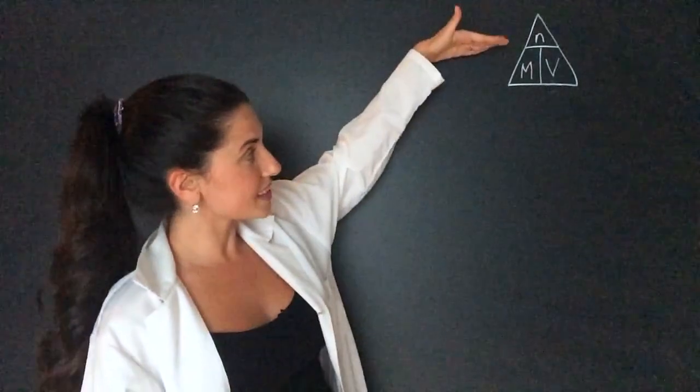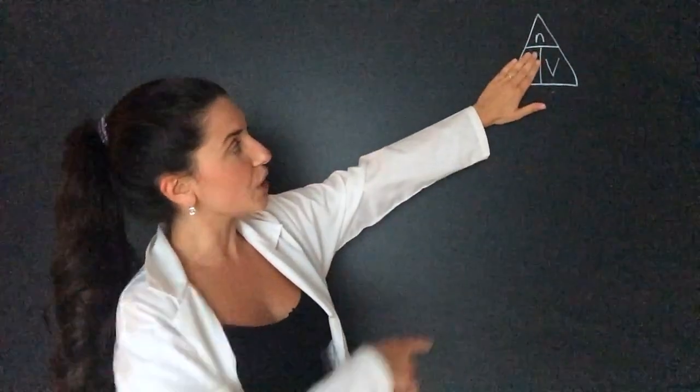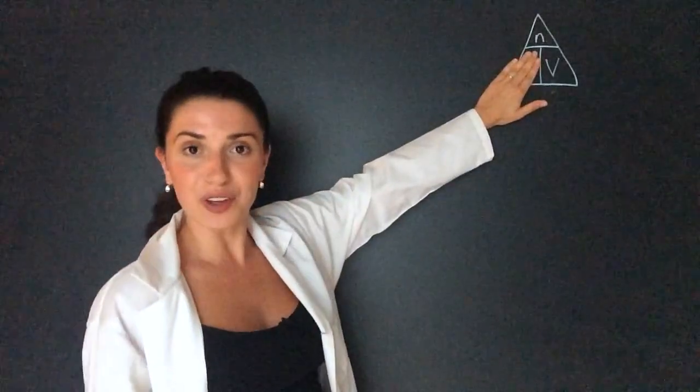I have this handy little triangle for you guys to memorize so you don't have to memorize the formula. This is moles at the top, molarity, and volume at the bottom. And the way we use this is say we're looking for molarity, we would just cover up the molarity and know that it's moles divided by volume.